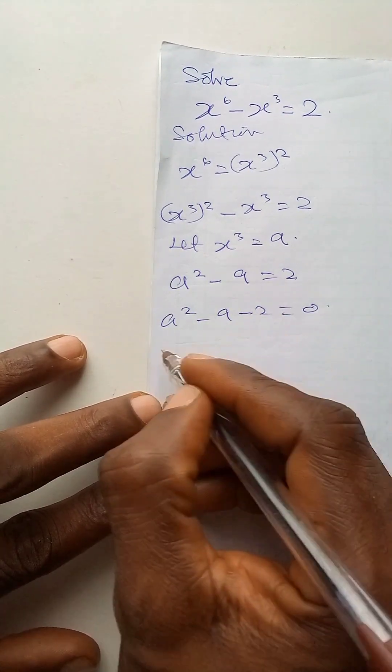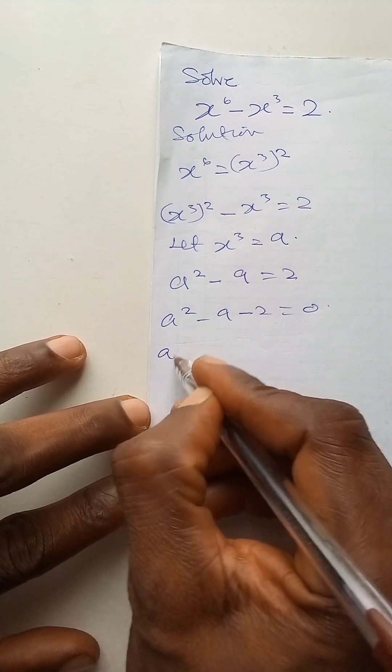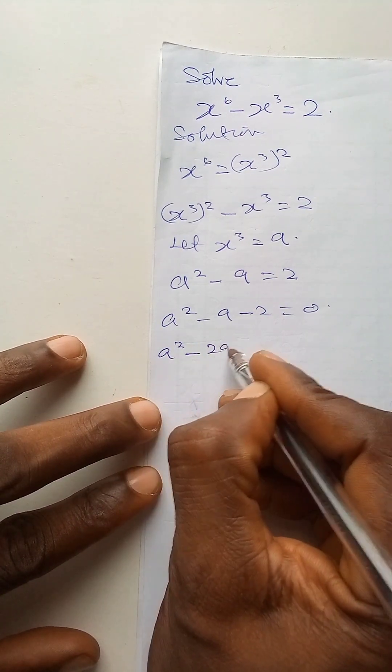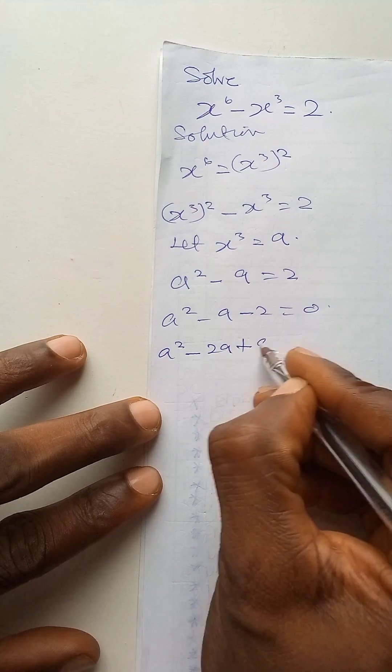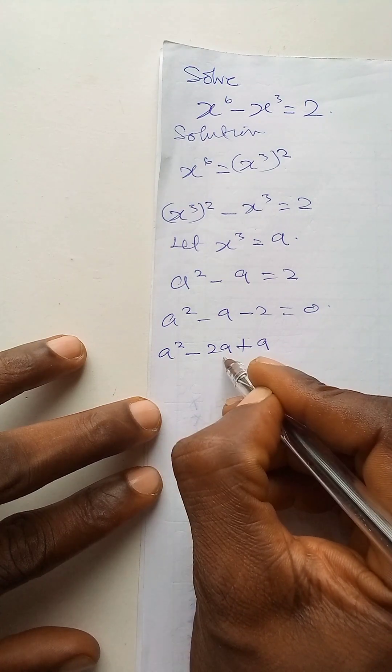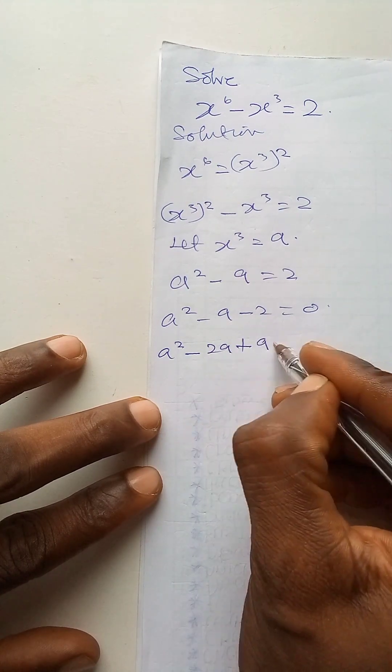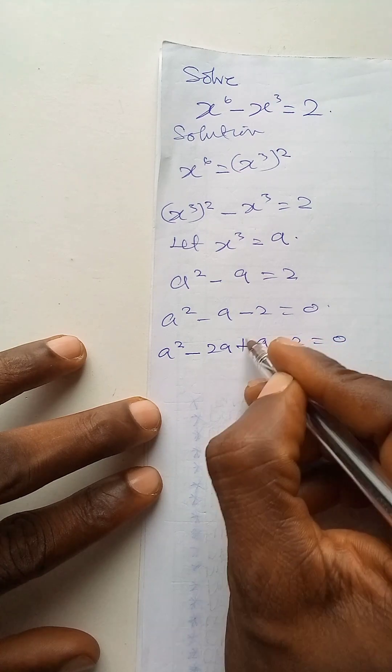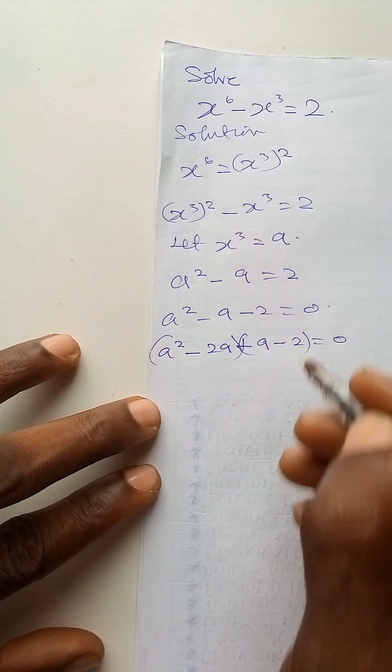Now we will factorize it by saying a to power 2 minus 2a plus a because minus 2a plus a is minus a minus 2 is equal to 0. So we will group this expression here.